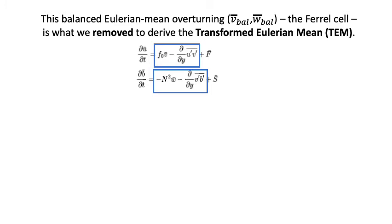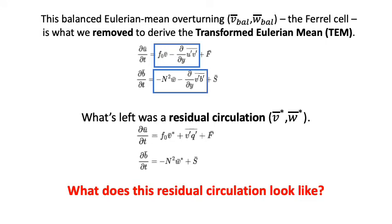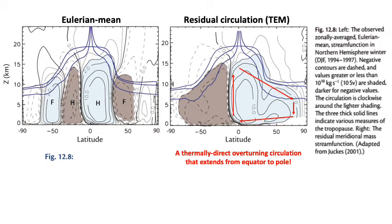What was left after removing the Ferrel cell was a residual circulation, V-bar-star and W-bar-star. The left plot shows our Eulerian mean case with the Ferrel cells, and the right shows the residual circulation V-star, W-star. It looks quite different — the residual circulation is now a thermally direct overturning circulation that actually extends from the equator to the pole, which is very different. What we've done here is effectively remove the Ferrel cell from the equations, and what's left is a residual equator-to-pole thermally direct overturning circulation.